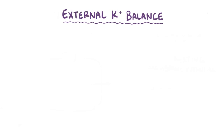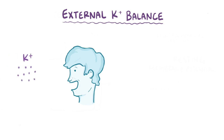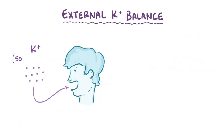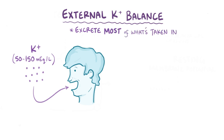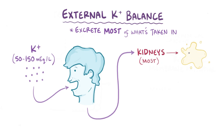In addition to the internal potassium balance, there is also an external potassium balance, which refers to the potassium you get externally through the diet every day. On a daily basis, potassium intake typically ranges between 50 and 150 milliequivalents per liter, which is way higher than the extracellular concentration of 4.5 milliequivalents per liter. So the body has to excrete most of what it takes in, largely through the kidneys, where excess potassium is secreted into the renal tubule and excreted in the urine. A small amount is also lost via the gastrointestinal tract and sweat.